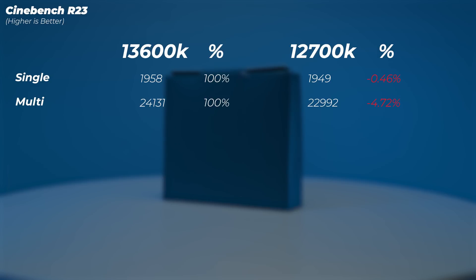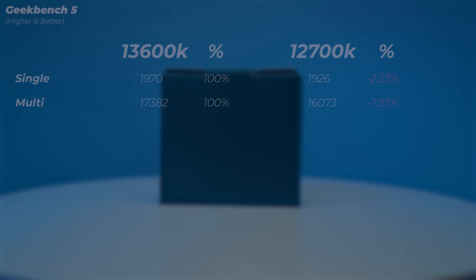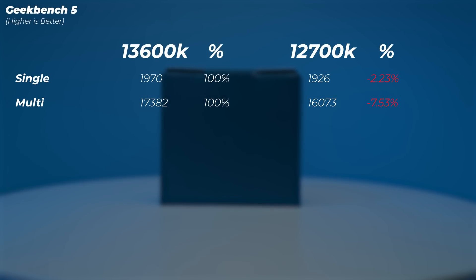In Cinebench R23, the 12700K is 0.46% slower in the single-core score and 4.7% slower in the multi-core score, so more cores do matter here. In Geekbench 5 the gap widens: the 12700K is 2.3% slower in single-core and 7.5% slower in multi-core.